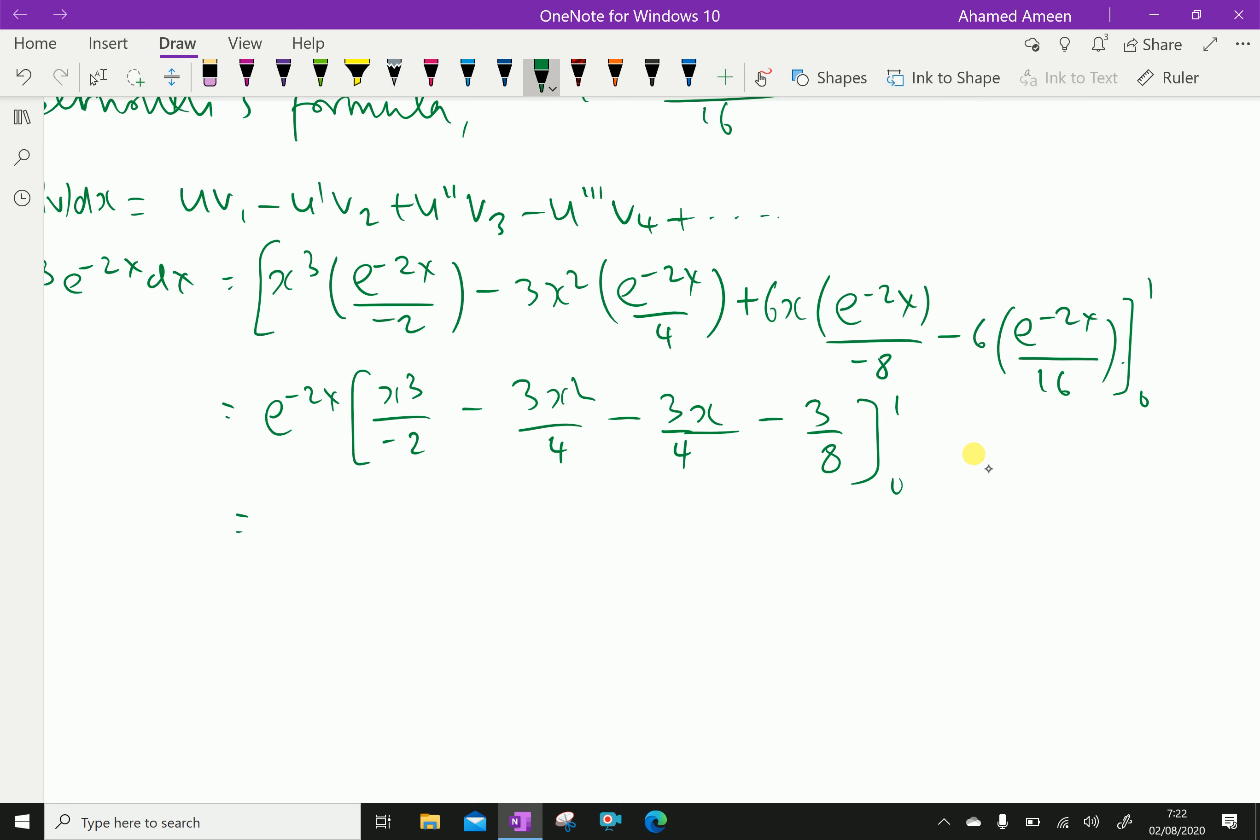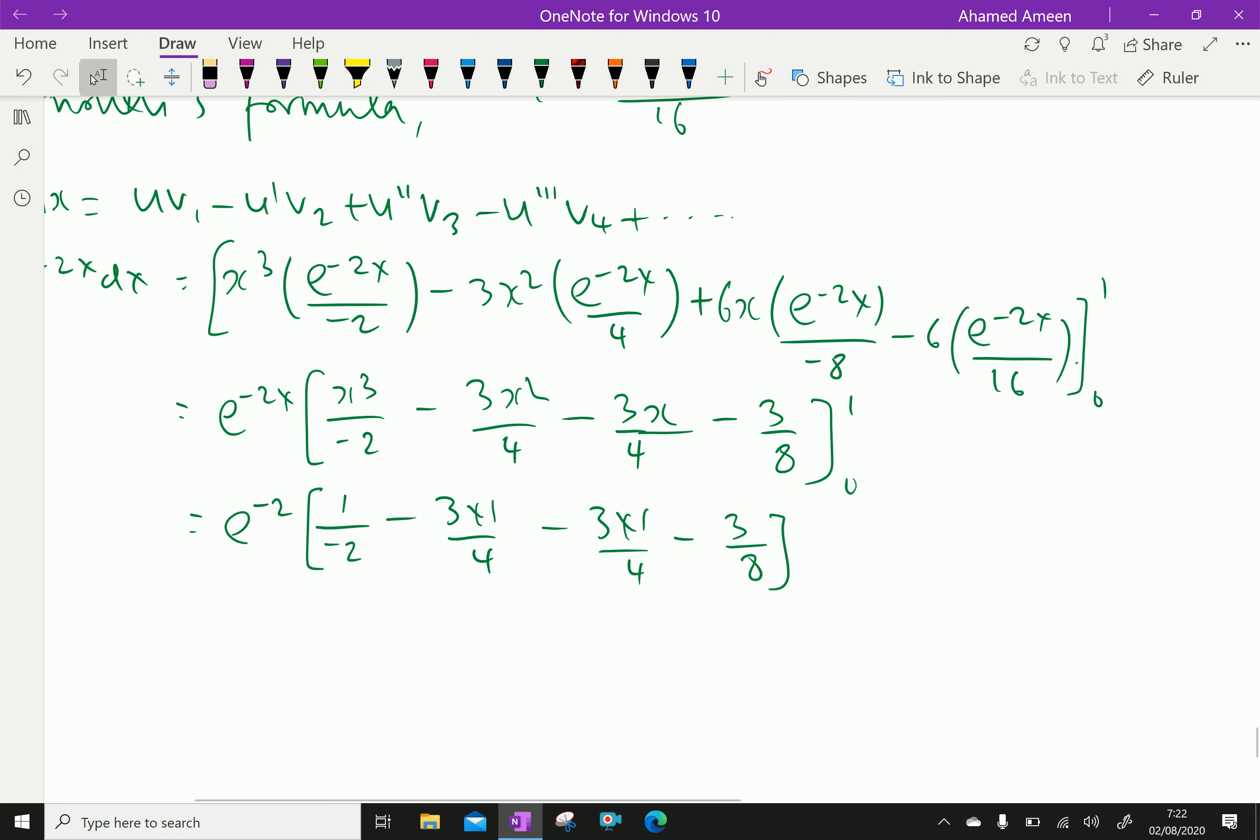We will apply the limits of 1. That is, e power minus 2 times 1 by minus 2 minus 3 by 4 minus 3 by 4 minus 3 by 8. Next is 0. We are substituting minus 2 into 0 is 0. All these terms become 0s, only minus 3 by 8.